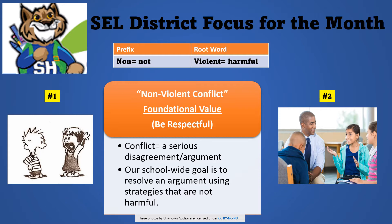Which picture — picture number one or picture number two — would be an example of nonviolent conflict? Would it be the picture on the left where it looks like they are really having some kind of argument, yelling at each other? One student has his hands on his hips, his mouth is open so wide you can see down his throat, and she looks like she is screaming back at him. Or picture two, where the students are sitting in a circle facing each other and the teacher is serving as a mediator?